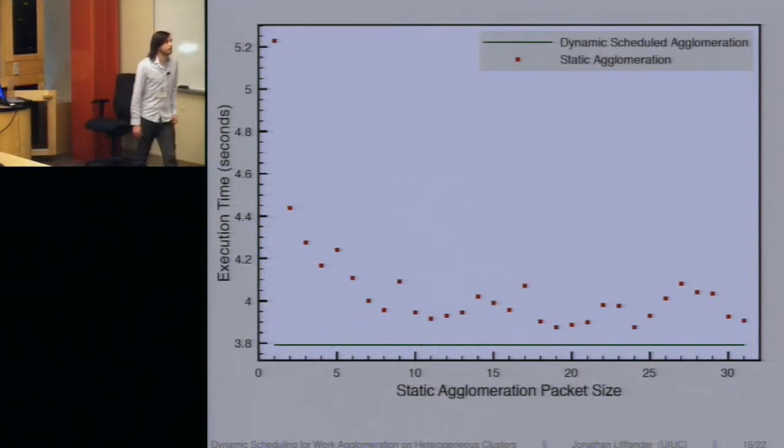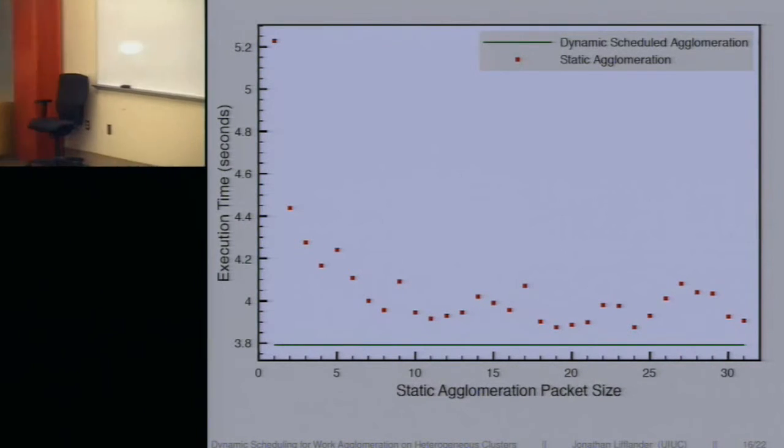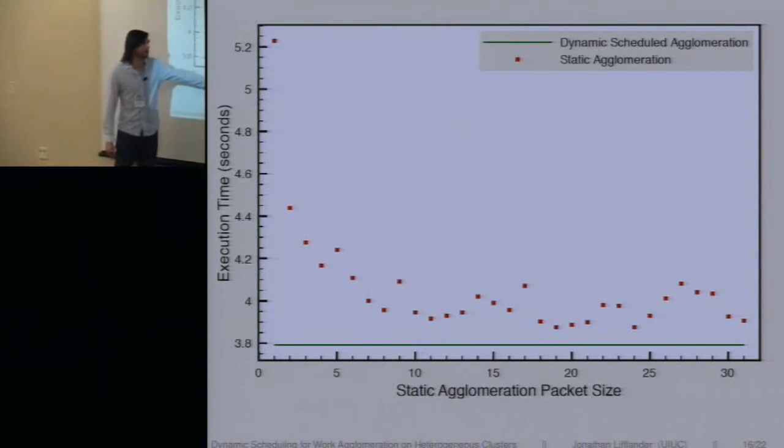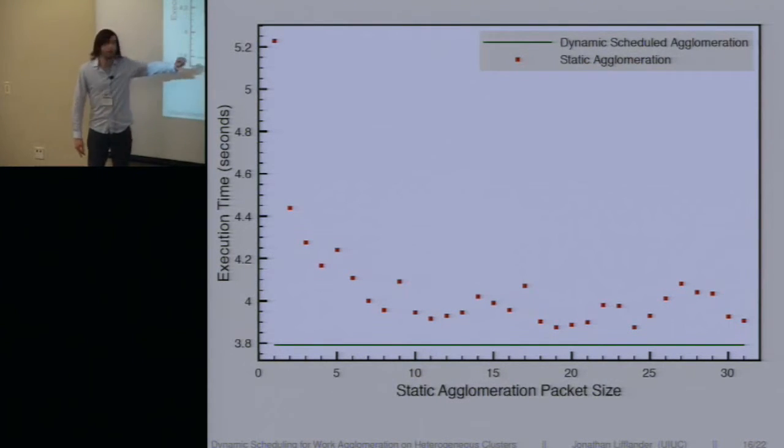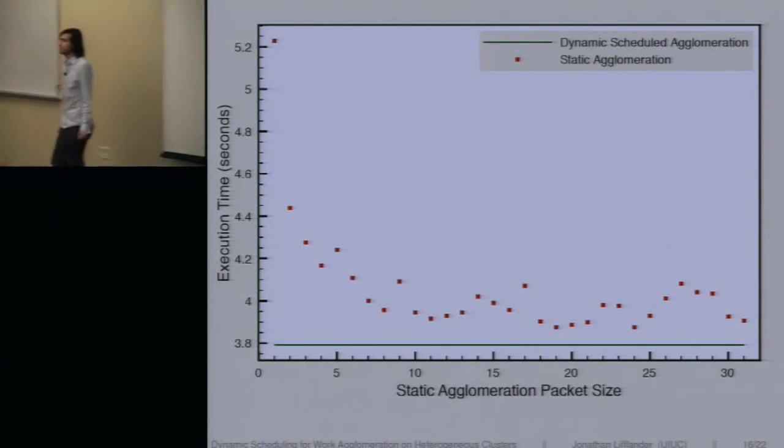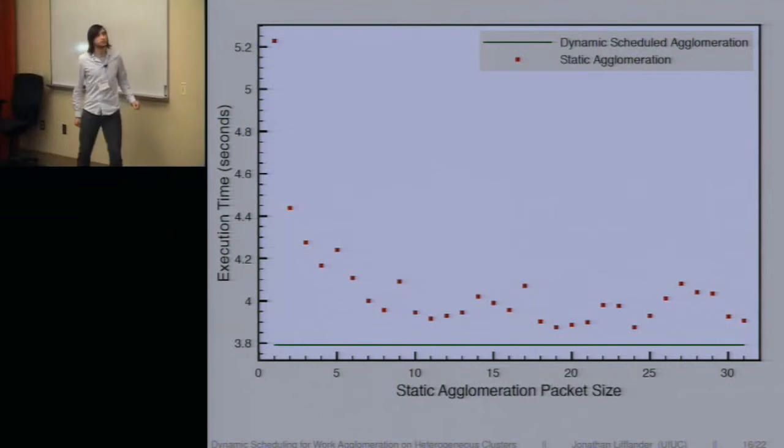And then the other thing is we now compare some static agglomeration packet size, so fixing what that size will be in the beginning of the execution. The application selects that, and then we execute with that versus keeping it dynamic. And my scale doesn't start at zero, but we still get some performance gain no matter what static size we pick. The dynamic wins.